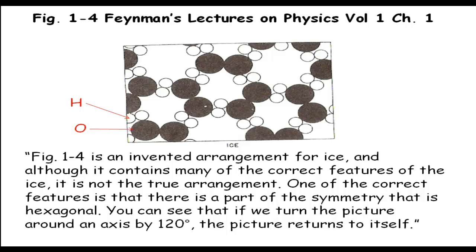it is not the true arrangement. One of the correct features is that there is a part of symmetry that is hexagonal. You can see that if we turn the picture around an axis by 120 degrees, the picture returns to itself.